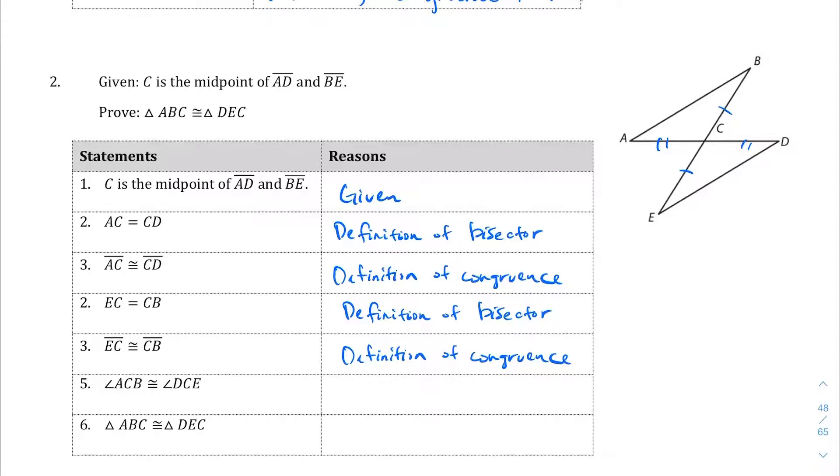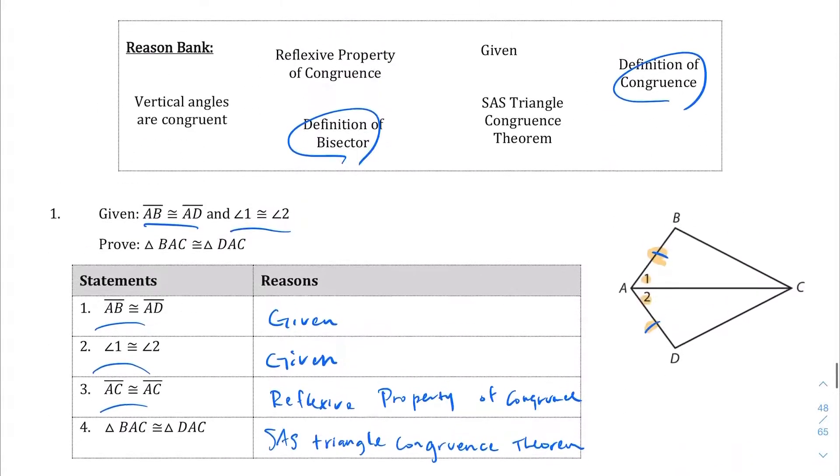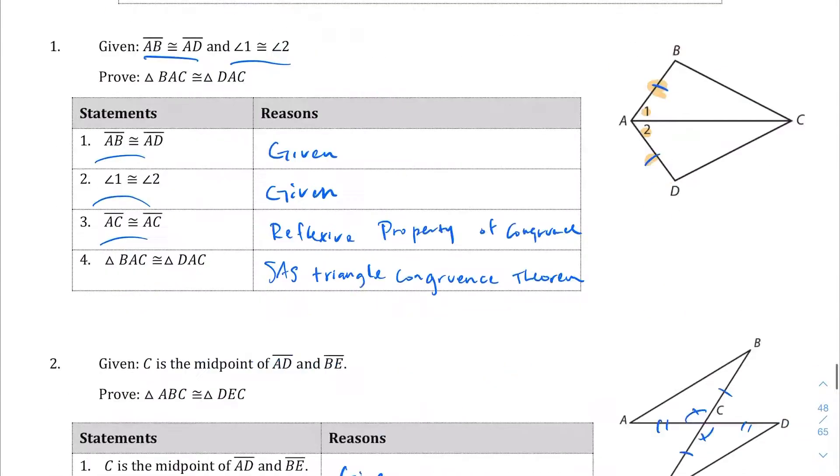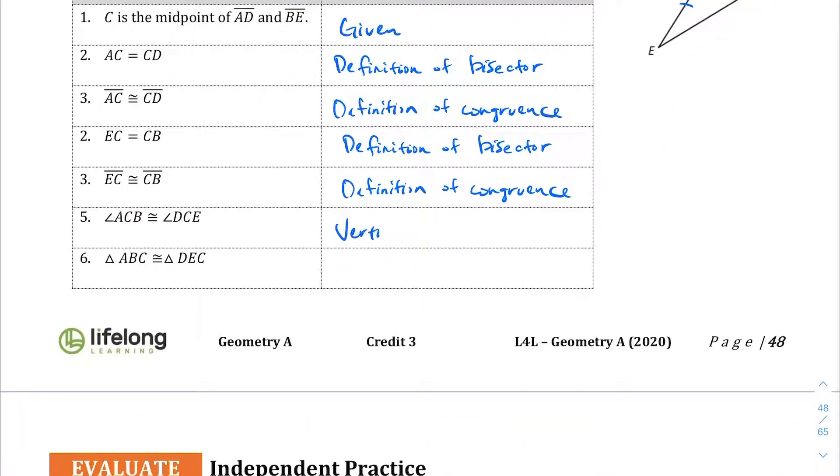Thanks to the magic of technology here. And then angle ACB being congruent to DCE. So this angle being congruent to this angle. They are vertical angles. So we're going to go with this statement right here. Vertical angles are congruent.